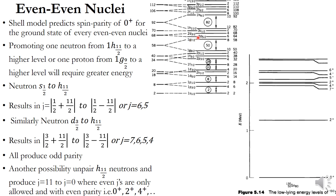Similarly, if one neutron from the D3/2 subshell breaks its pairing and goes to 1H11/2, then D3/2 and 1H11/2 each contain one unpaired neutron. The resultant angular momentum is the coupling of 3/2 and 11/2, giving J = 7, 6, 5, 4, again with odd parity, since the orbital angular momentum values of D and H are 2 and 5.